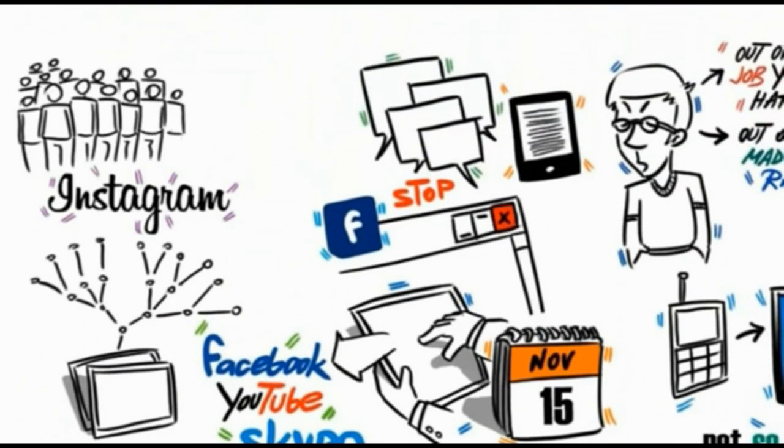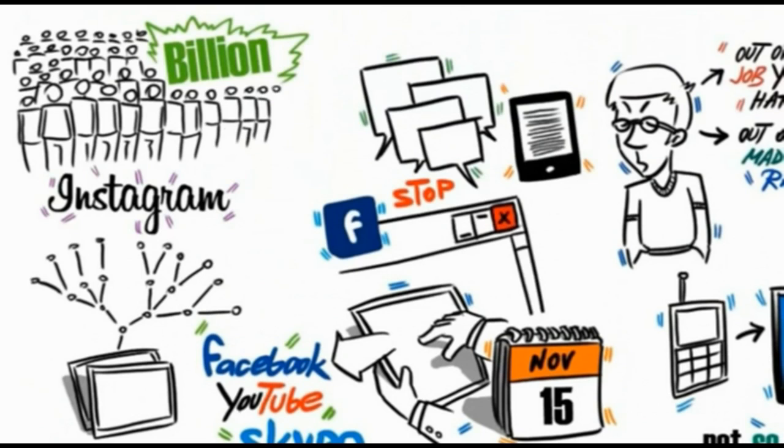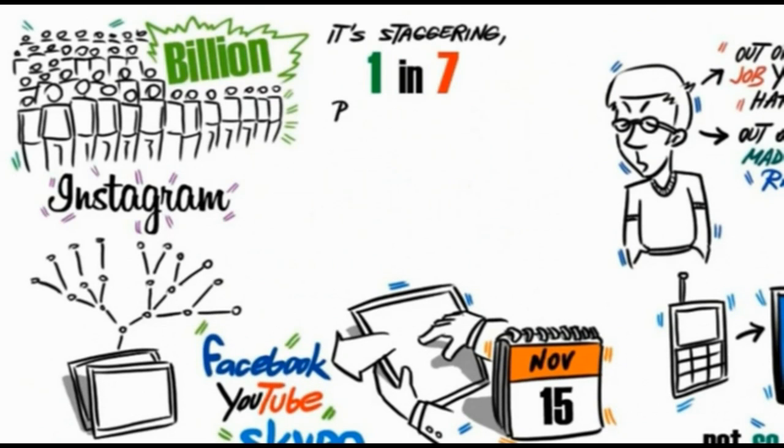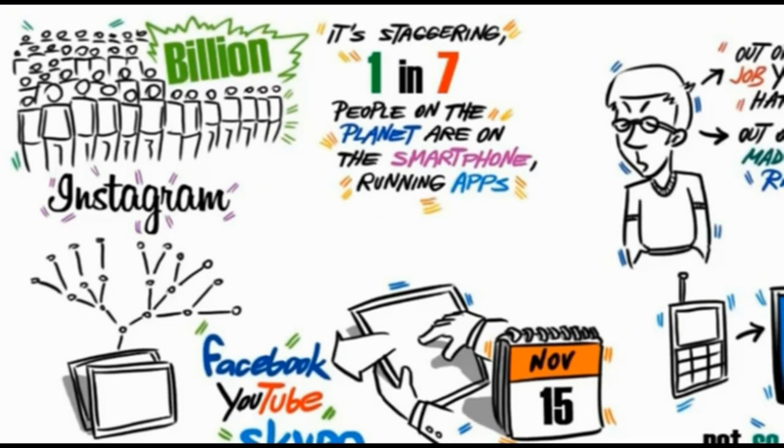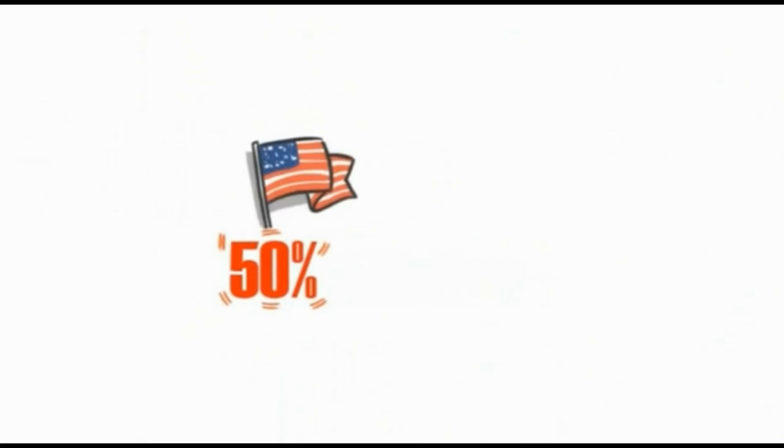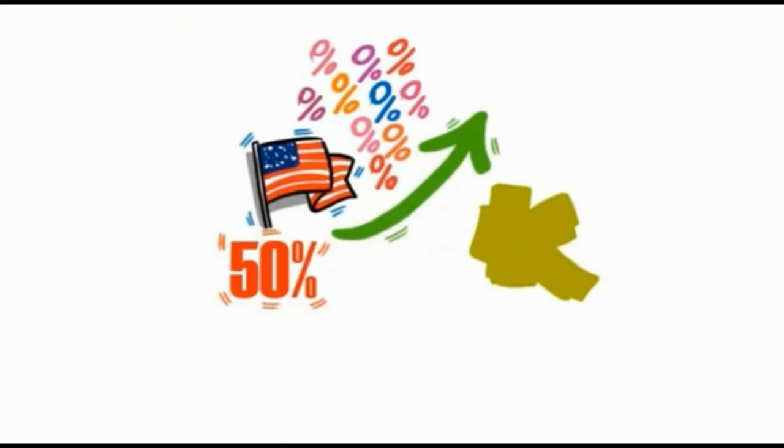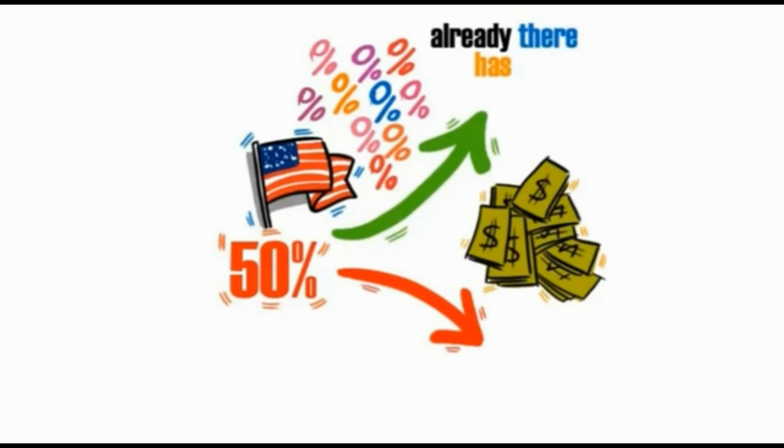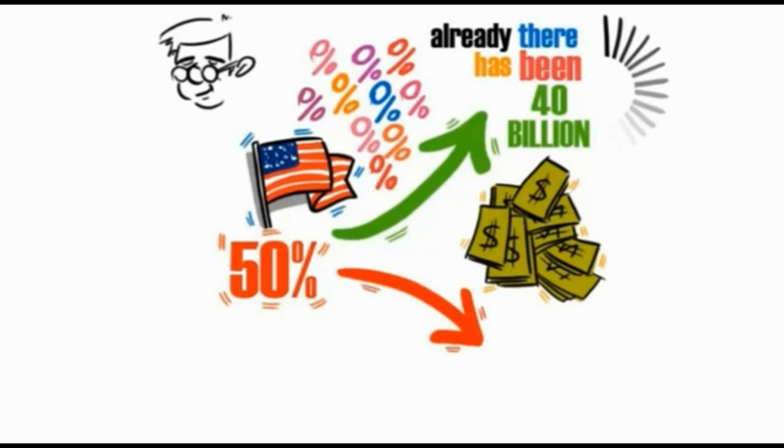Already, there are over a billion smartphone users in the world. It's staggering. One in seven people on the planet are using smartphones running apps. Did you know more than 50% of Americans use a smartphone? Amazing huh? And that figure is growing at an incredible rate. Soon, everyone will be on a smartphone. The cost of production is coming right down. Already, there have been 40 billion downloads of apps.